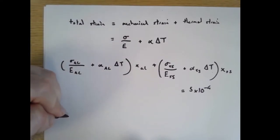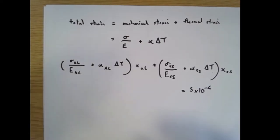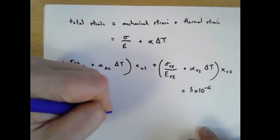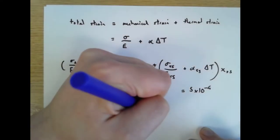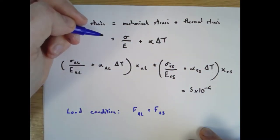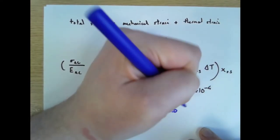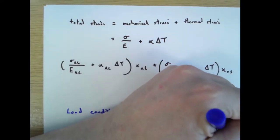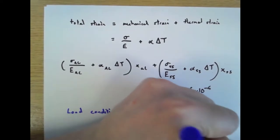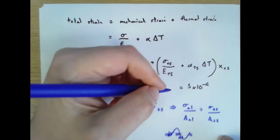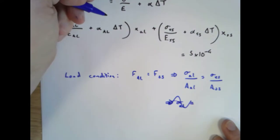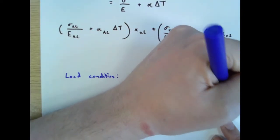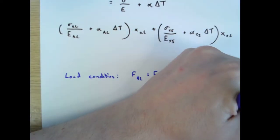Going back to the load condition: the force in the aluminium equals the force in the stainless steel — they must balance each other out, otherwise something would have to move sideways. Force equals stress times area, so sigma_Al times area_Al must equal sigma_SS times area_SS. Since we're asked for the stress in the aluminium, I want to substitute out the stress in the stainless steel: sigma_SS equals sigma_Al multiplied by area_SS divided by area_Al.